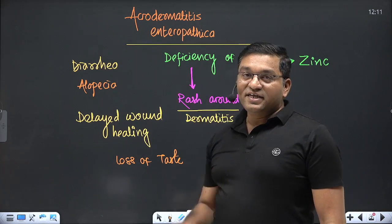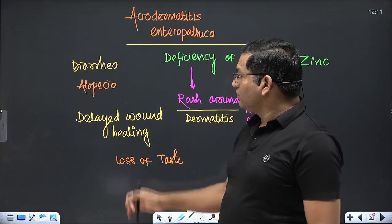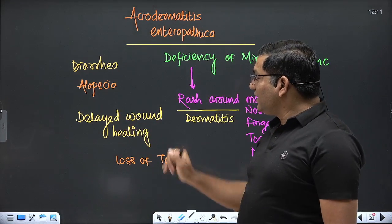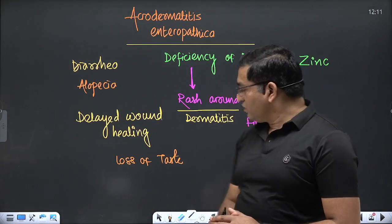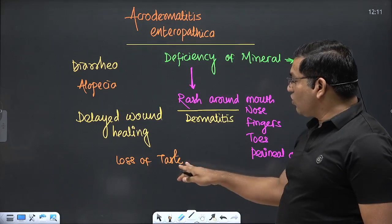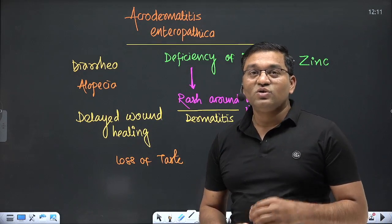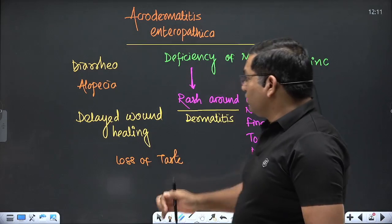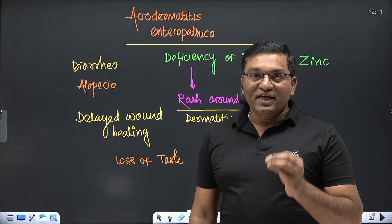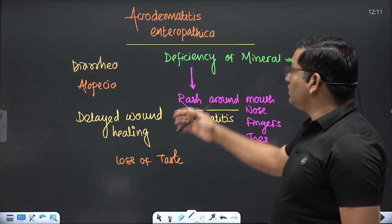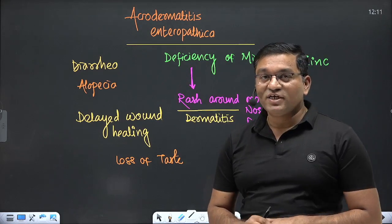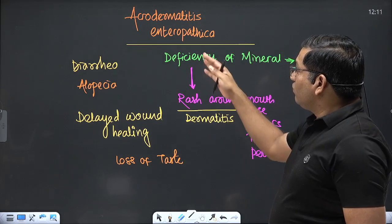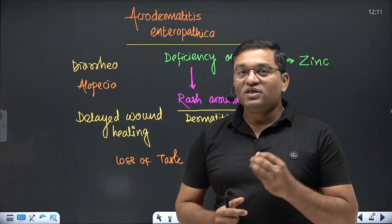Other features of zinc deficiency include diarrhea, alopecia (hair loss), delayed wound healing, and loss of taste sensation. It can also impair spermatogenesis and affect the vitamin A level in the serum. This is the condition of acrodermatitis enteropathica due to zinc deficiency.